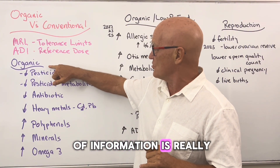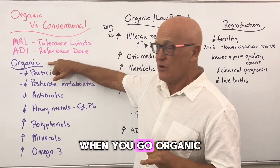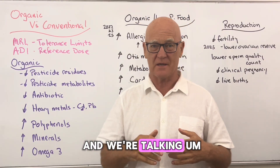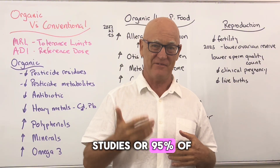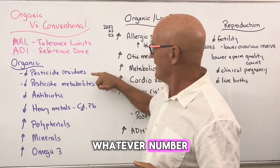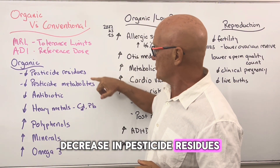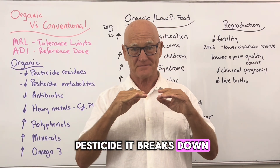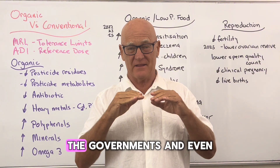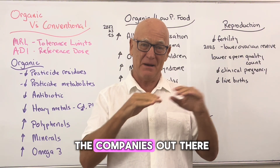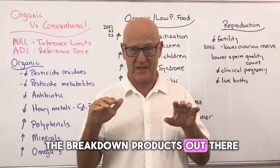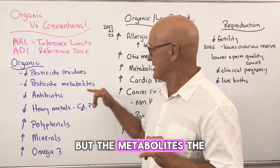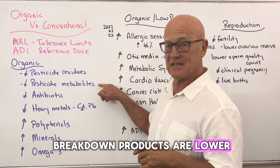When you go organic, there is no doubt — consistently across the board, nine out of ten studies or around 95% of studies show a decrease in pesticide residues and a decrease in their metabolites. When you use a pesticide it breaks down, and unfortunately governments and companies don't know all the breakdown products. We only measure for one or two components, but the metabolites — the breakdown products — are lower in organic food.